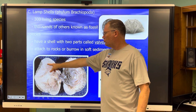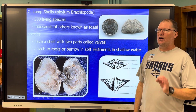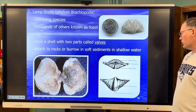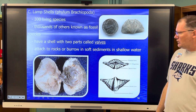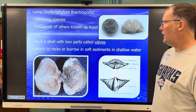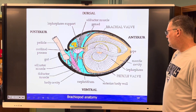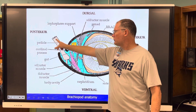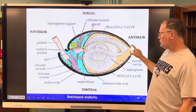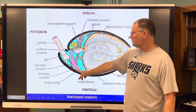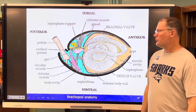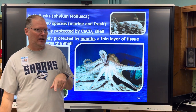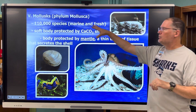Brachiopods have a shell with two parts called valves. They attach to rocks and soft sediments in shallow water and look like little clams or oysters, but they're not — they're brachiopods. The anatomy is very complex. This is the pedicle they use to attach themselves, and they have adductor muscles that keep their valves closed. But we won't get too deeply into that because this isn't the creature we'll be drawing for our field guide — that will be something in the mollusk phylum, phylum Mollusca.